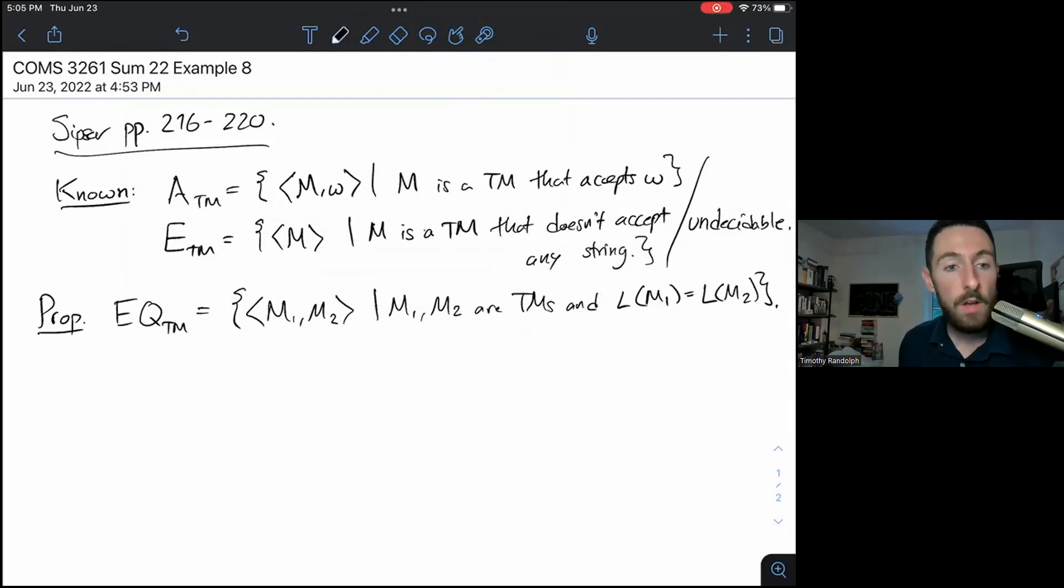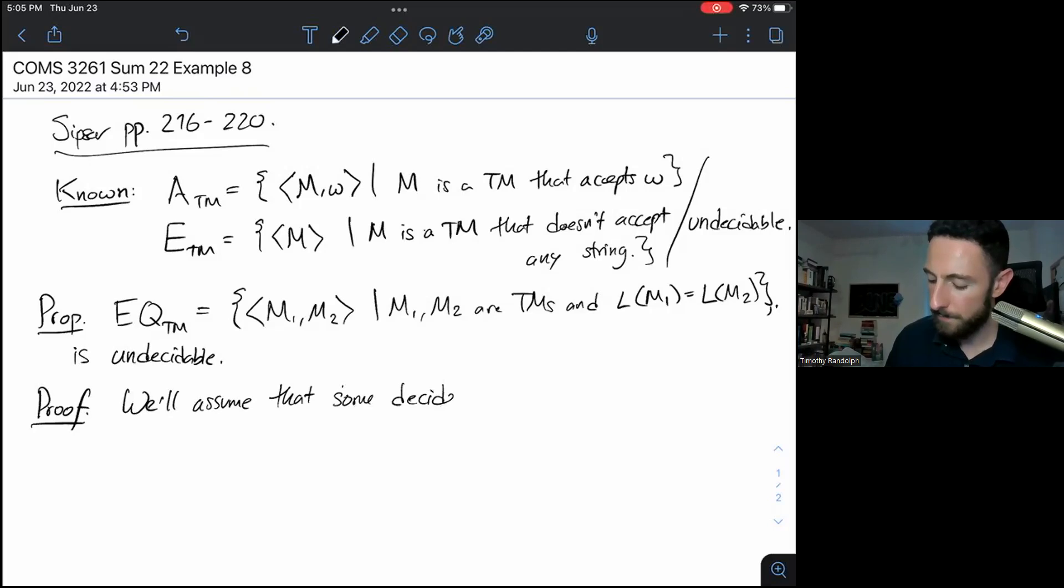Let's jump right into it. We want to show that the language EQTM, which takes in two TMs, contains the string that encodes the TMs if and only if they have the same language, they recognize the same language. We want to show that this is undecidable. And our proof will go as follows. So we'll assume that some decider T decides EQTM. So this is an assumption. We want to find a contradiction that follows from this assumption.